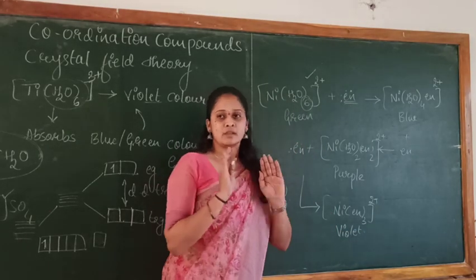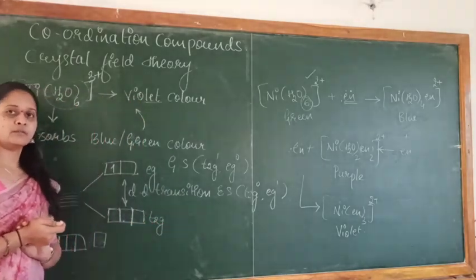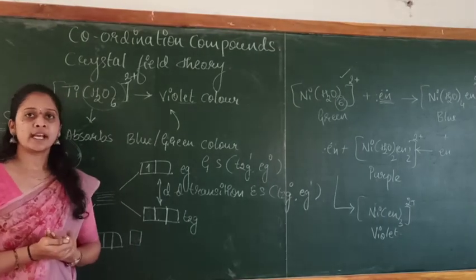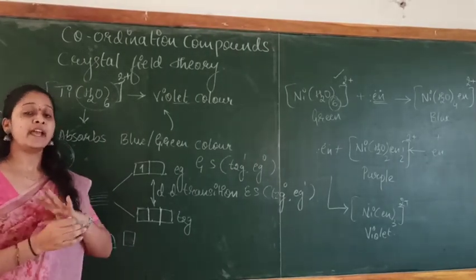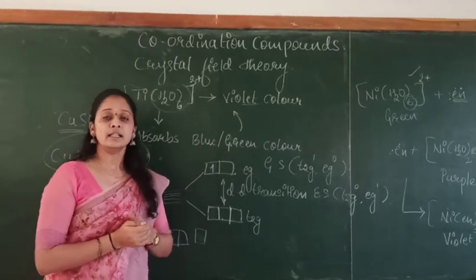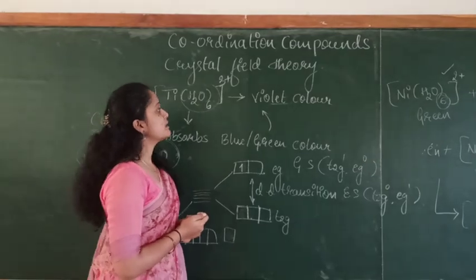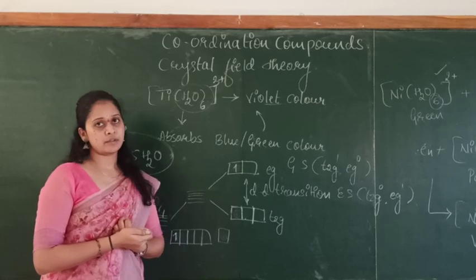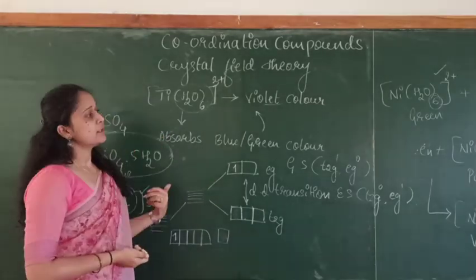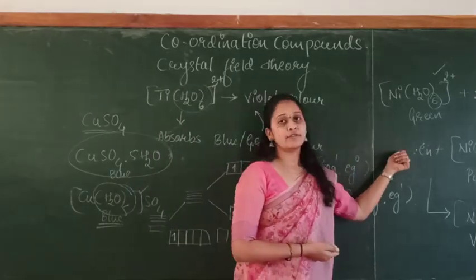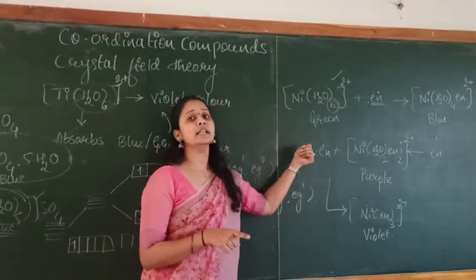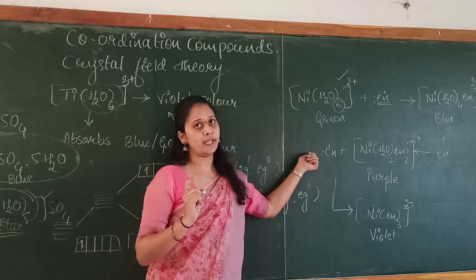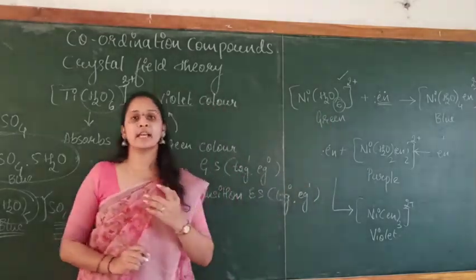In summary, coordination compounds exhibit a variety of colors because of the d-d transitions taking place within them. The color of the compound is mainly dependent on the ligand to which the central metal atom is attached, and variation in ligands leads to variation in color.